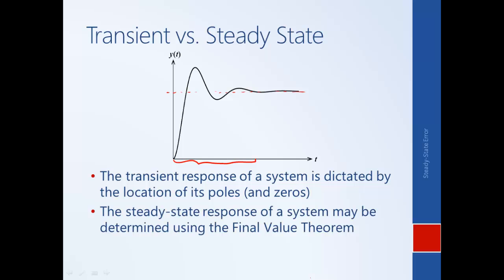It's also important to achieve a certain steady state behavior. In this example where the input is a constant, the steady state behavior is defined by the final value reached by the system's response. We can determine the final value using the final value theorem: y steady state equals the limit as s approaches 0 of s times Y(s), where y is the output. We also want to achieve a certain limit on the steady state error.